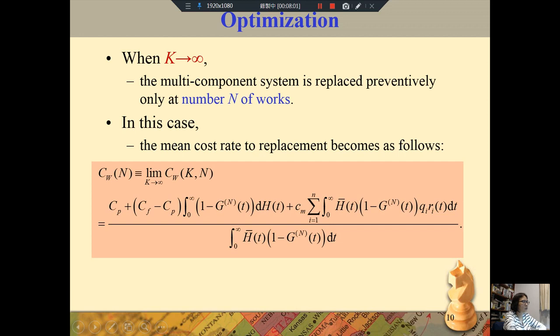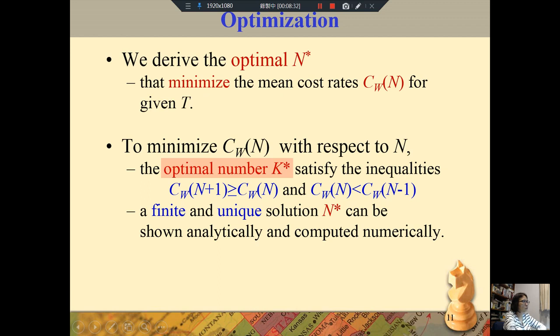When K is infinite, the multi-component system is replaced preventively only at the number N of works. In this case, the mean cost rate to replacement becomes as follows: CW(N) like this equation. We derive the optimal N* that minimizes the mean cost rate CW(N) for a given T. To minimize CW with respect to N, the optimal number N* satisfies the equalities, and a finite and unique solution N* can be shown analytically and computed numerically.